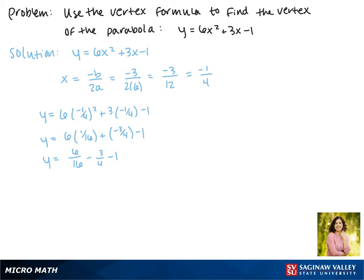We need to give these all a common denominator. That common denominator is 16, so the first stays the same. The second term will multiply top and bottom by 4, and the last term 1 is 16 over 16.